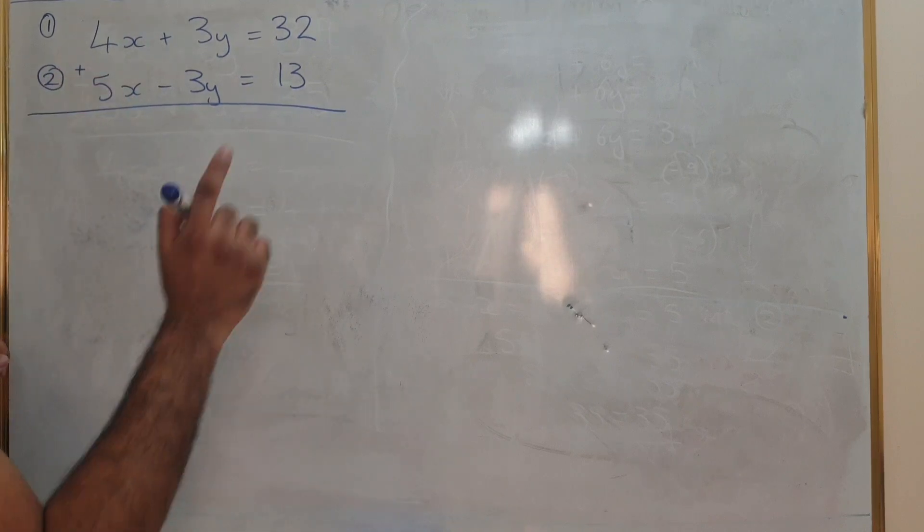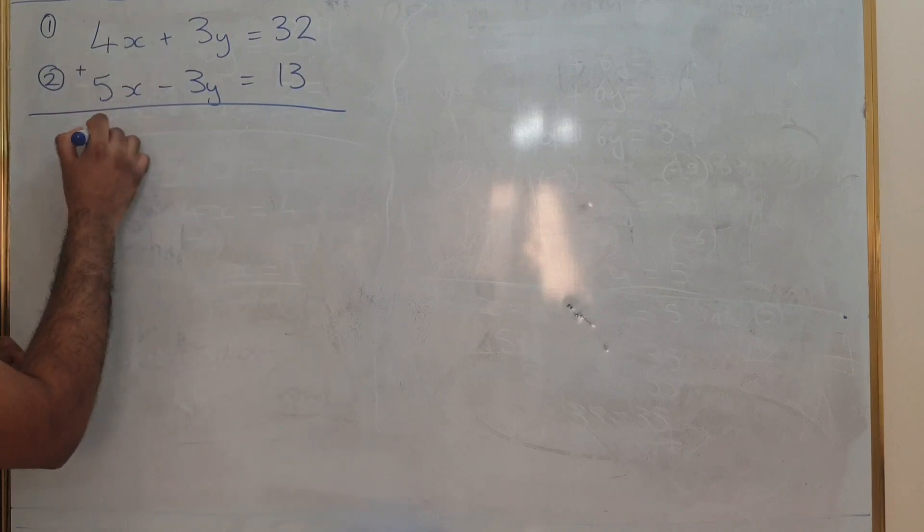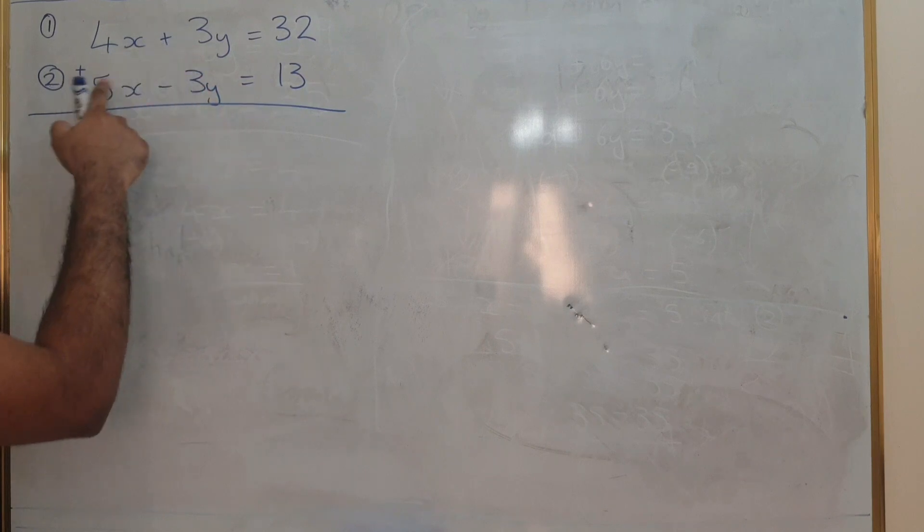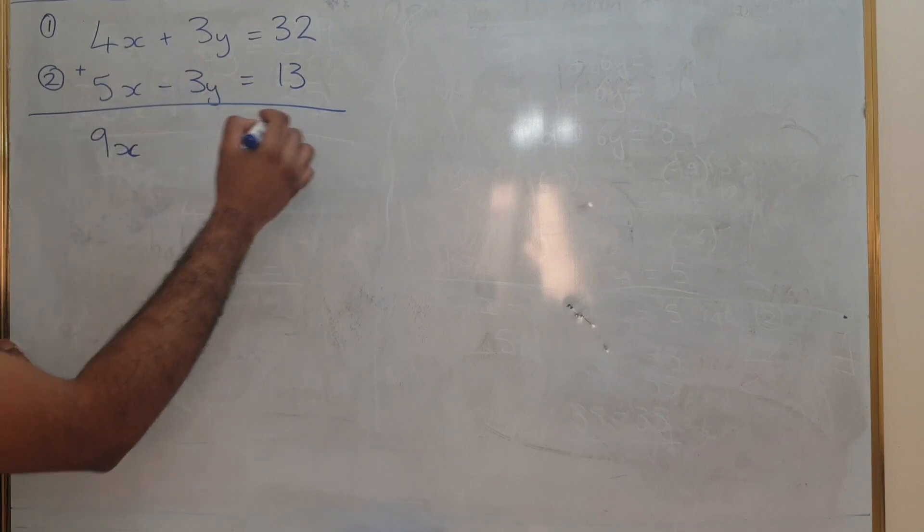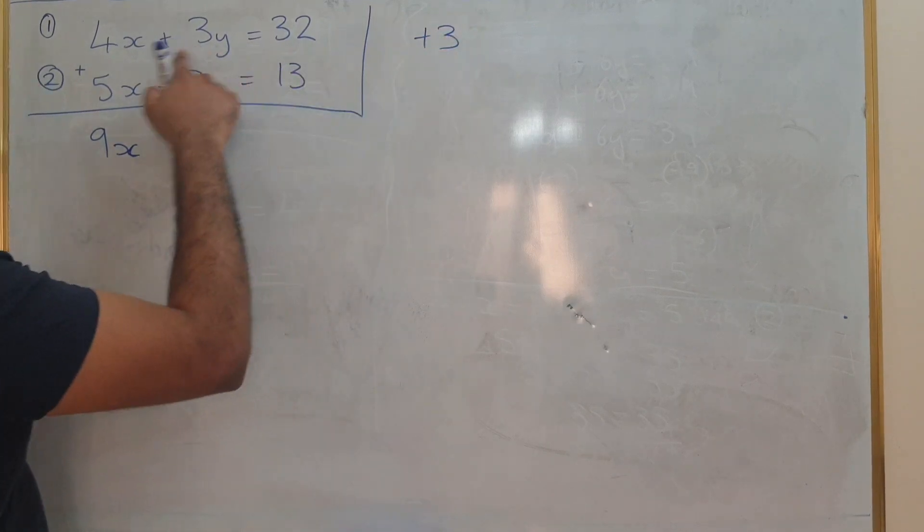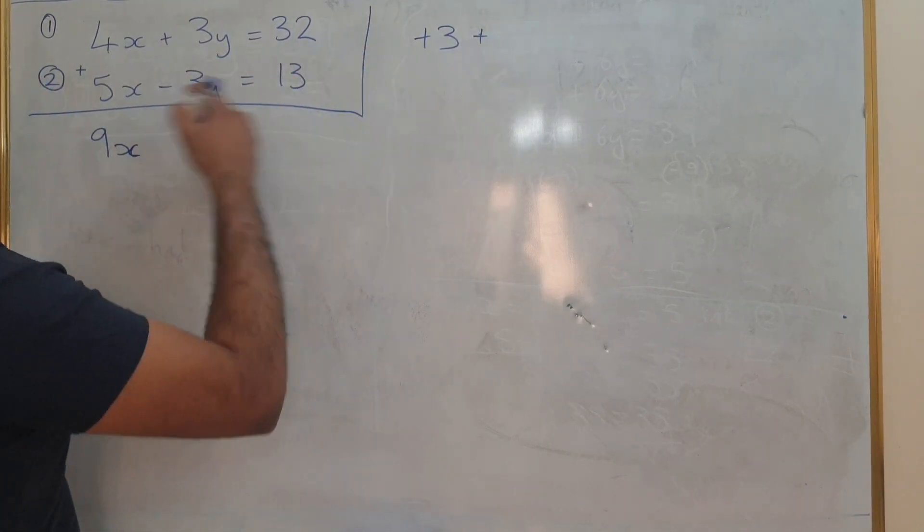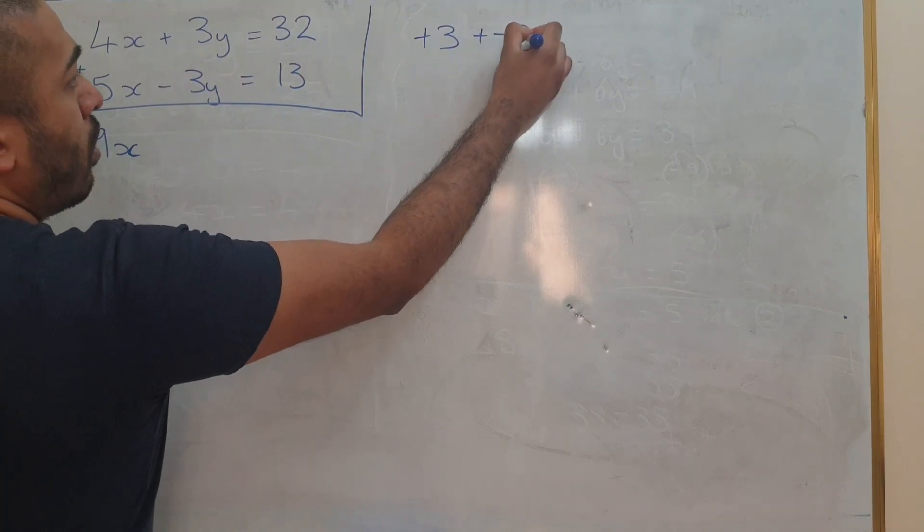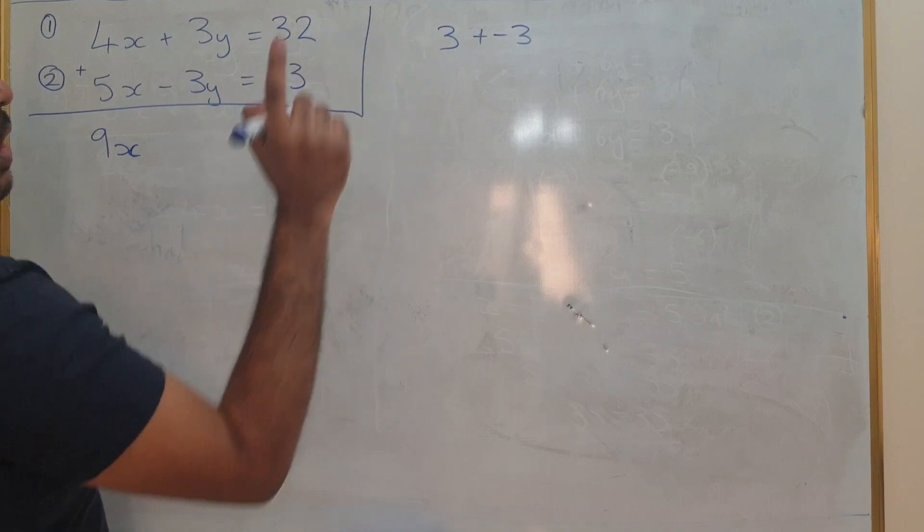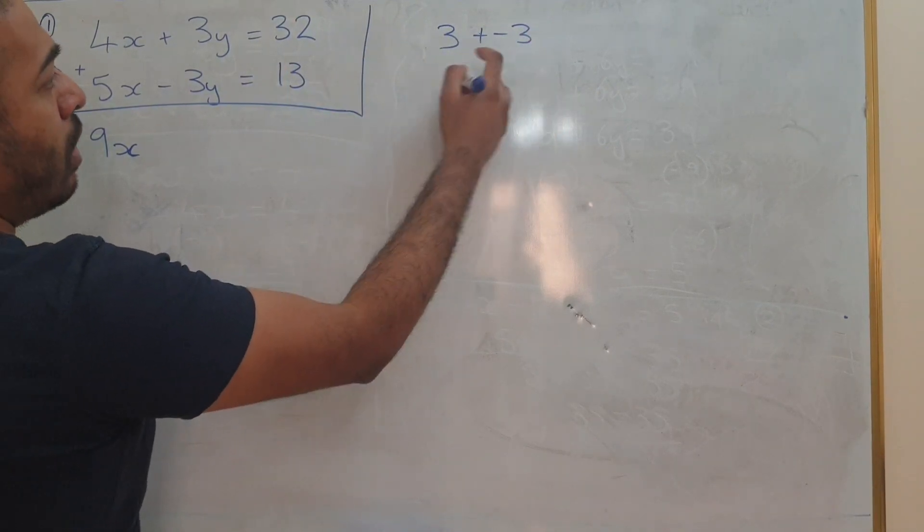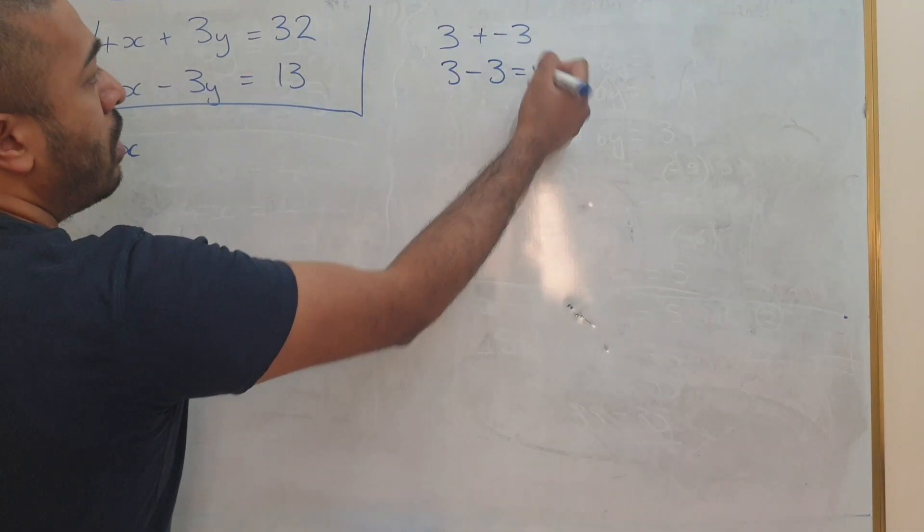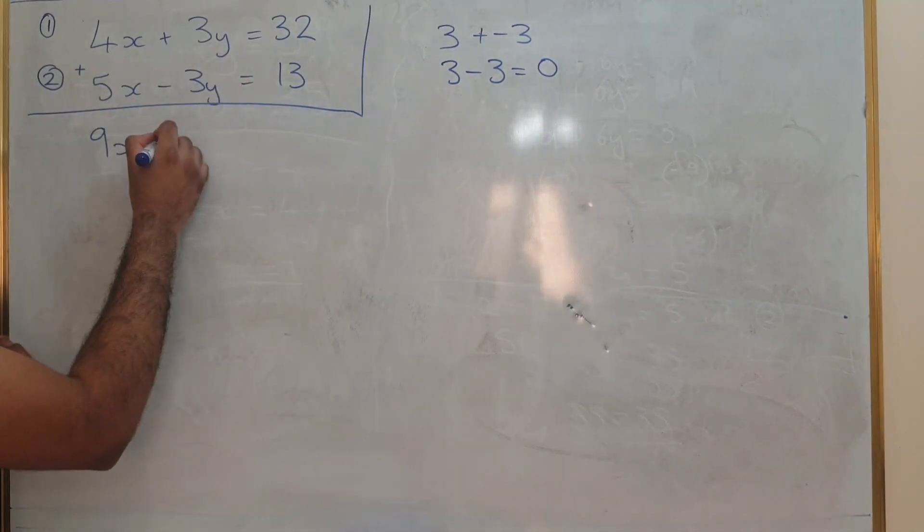So what's going to happen now if you add these two, you're going to get 9x, 3y plus minus 3y. So this is actually like the following. You've got positive 3 and you're adding minus 3. Well, if you've got positive 3, we don't need to write the positive sign. So it's 3 plus minus 3. So that becomes 3 minus 3, which is 0. So that cancels itself out.